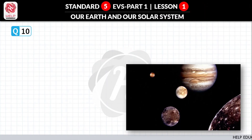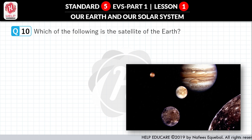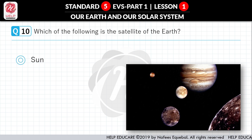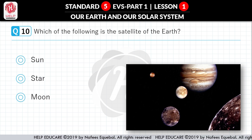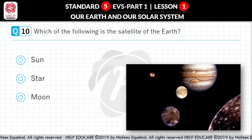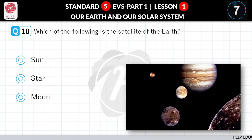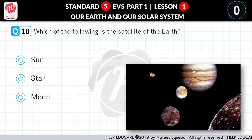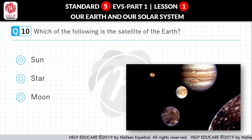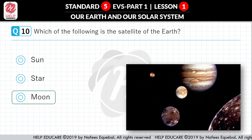Question No. 10: Which of the following is the satellite of the Earth? First option: Sun. Second option: star. Third option: moon. Correct answer is Moon.